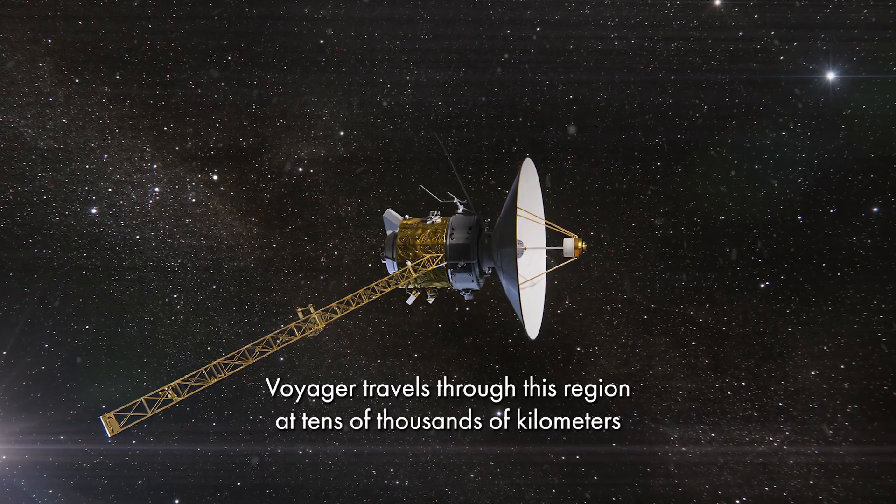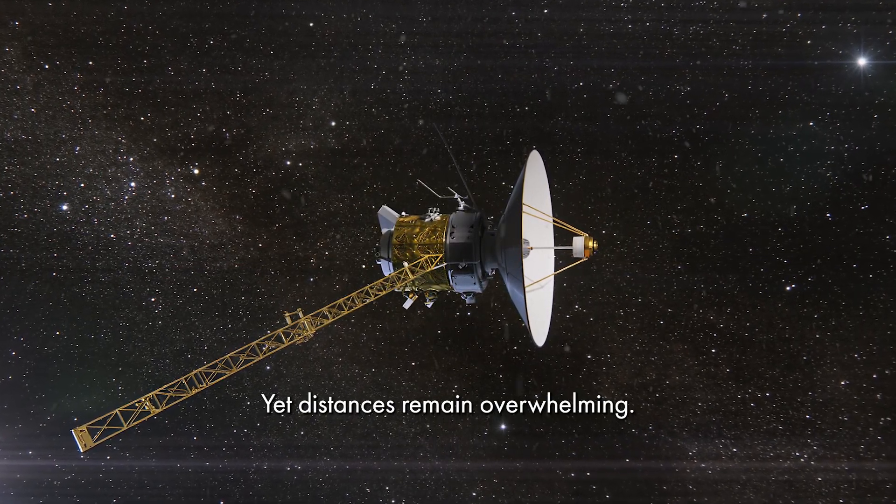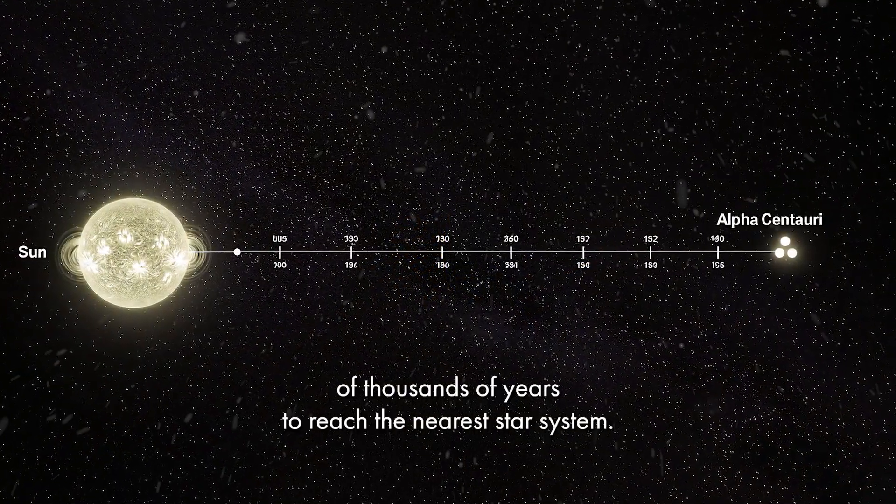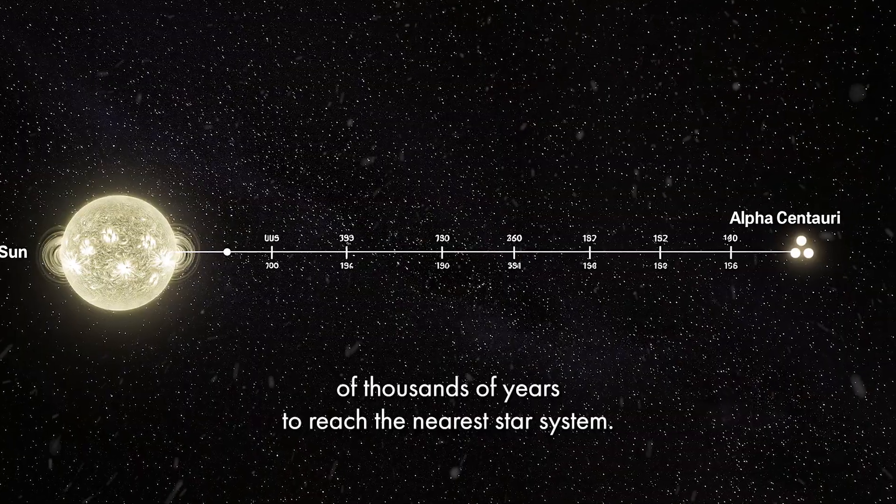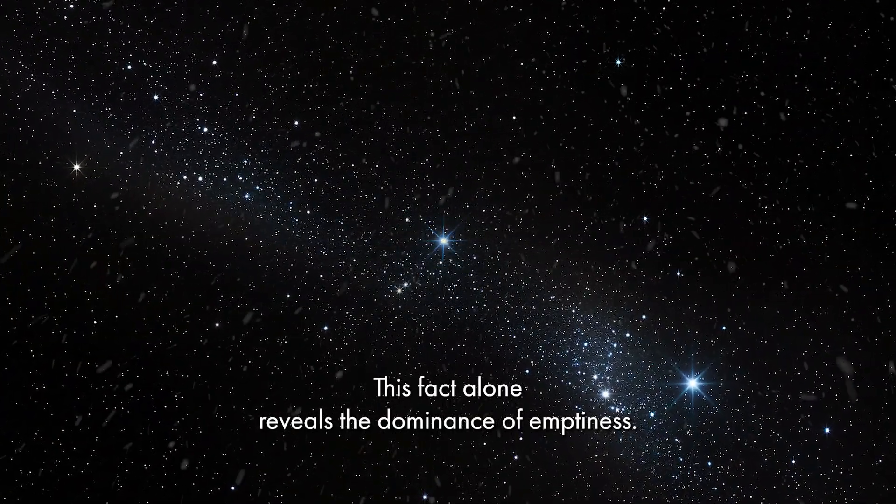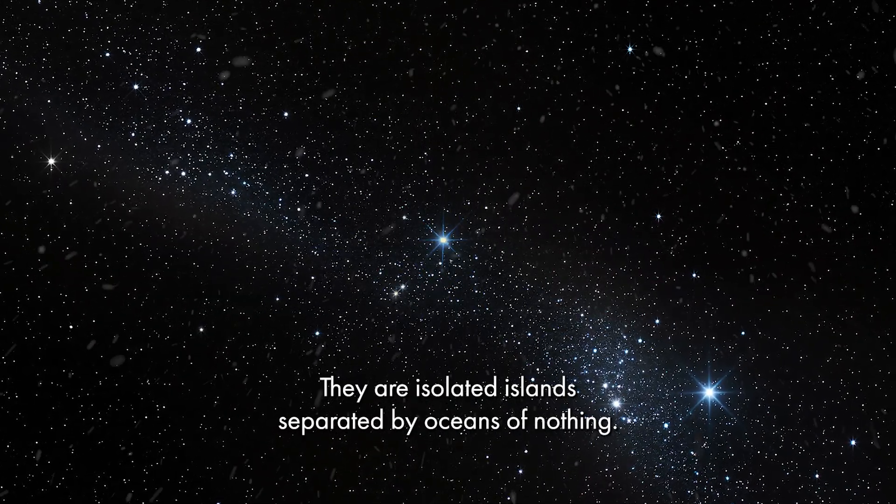Voyager travels through this region at tens of thousands of kilometers per hour, yet distances remain overwhelming. Even at this speed, Voyager will take tens of thousands of years to reach the nearest star system. This fact alone reveals the dominance of emptiness. Stars are not neighbors. They are isolated islands separated by oceans of nothing.